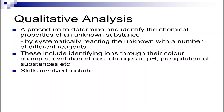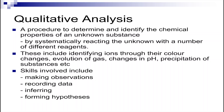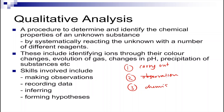The skills involved include making observations, recording data, inferring and forming hypotheses. In all, there are three key things that you need to know for this topic. You need to carry out the experiment — this is done during your practical. You need to write down the observation, and you need to know the chemistry behind it. This chemistry behind it is usually tested in your theory paper.